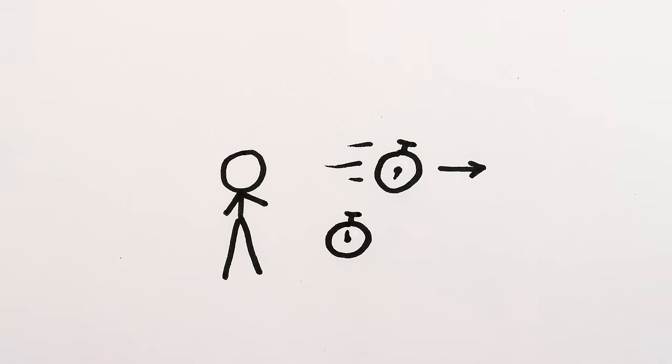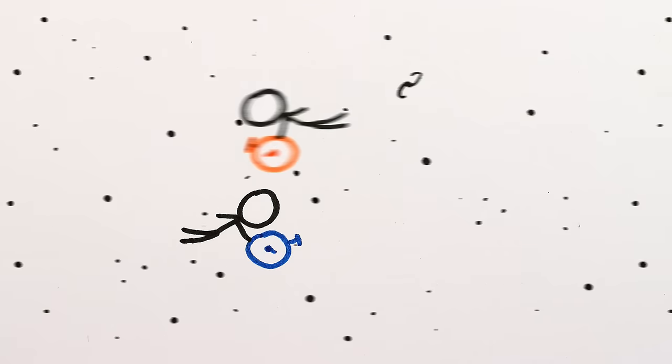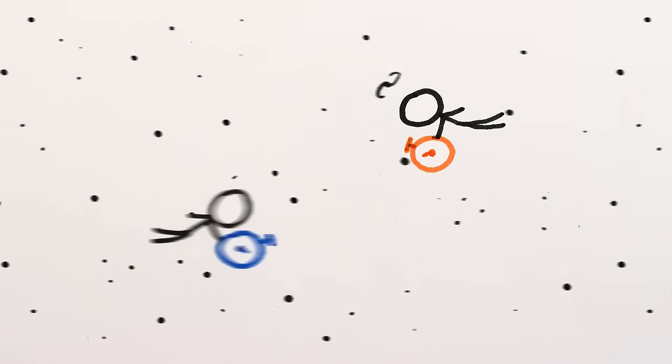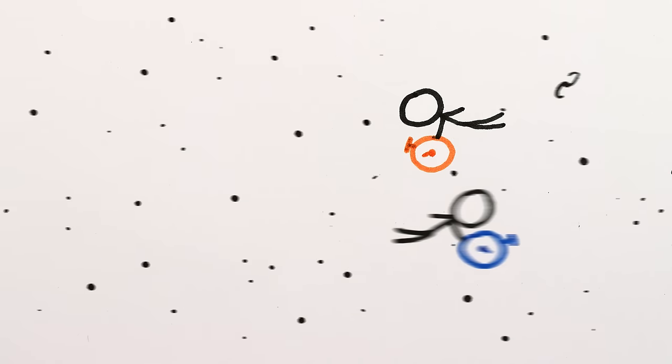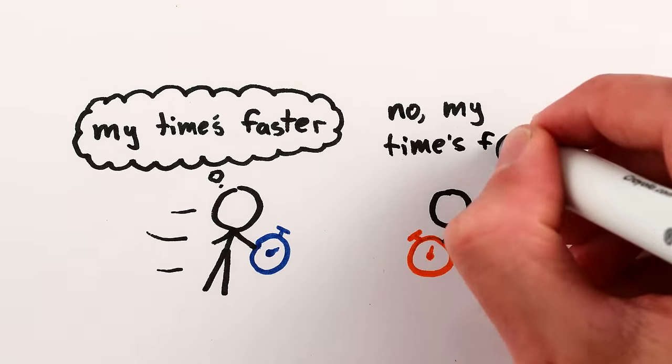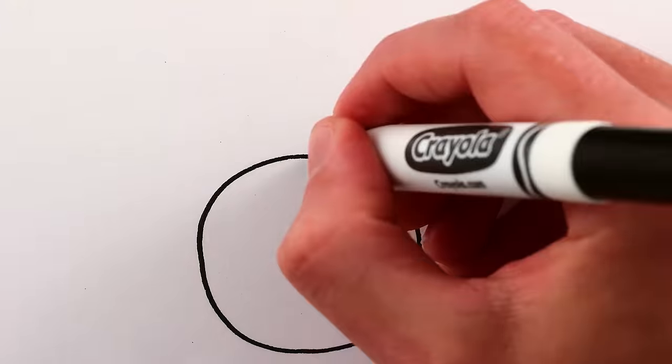But relativity of time can at first glance seem somewhat contradictory. Suppose we're flying past each other. From my perspective it seems like you're moving, and so time should go more slowly for you. And from your perspective it seems like I'm moving, so time should go more slowly for me. It seems crazy that we can both think time is going slower for the other person. Someone's time must actually be slower, right? Well, no.